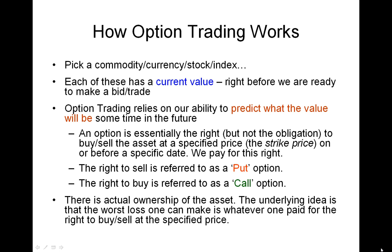Note that there is actual ownership of the asset — or more precisely, indirect ownership — because what we are purchasing is the right to buy or sell that asset. The underlying idea behind option trading is that the worst loss one can incur is whatever one paid for the right to buy or sell at the specified price. For those who don't quite get this at first read, we're going to go into an example which will hopefully explain exactly what this means.